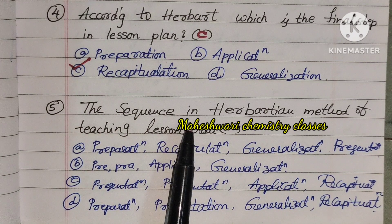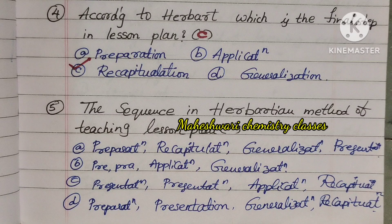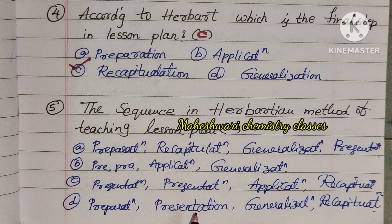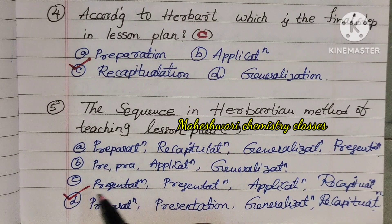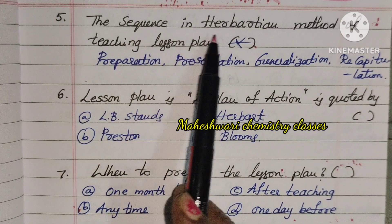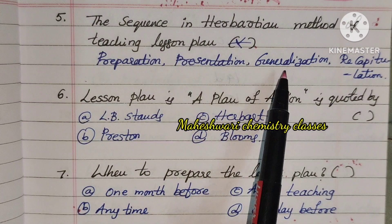Fifth question: The sequence in the Herbartian method of teaching lesson plan. We discussed this exactly. The options include various sequences. The correct sequence in the Herbartian method is: Preparation, Presentation, Generalization, and Recapitulation.